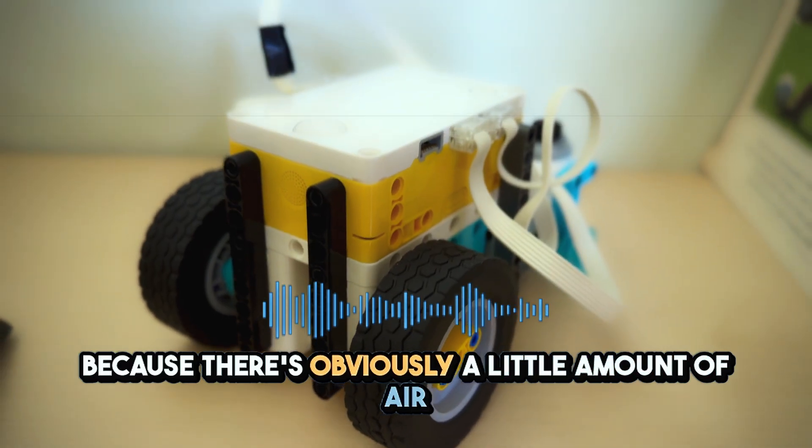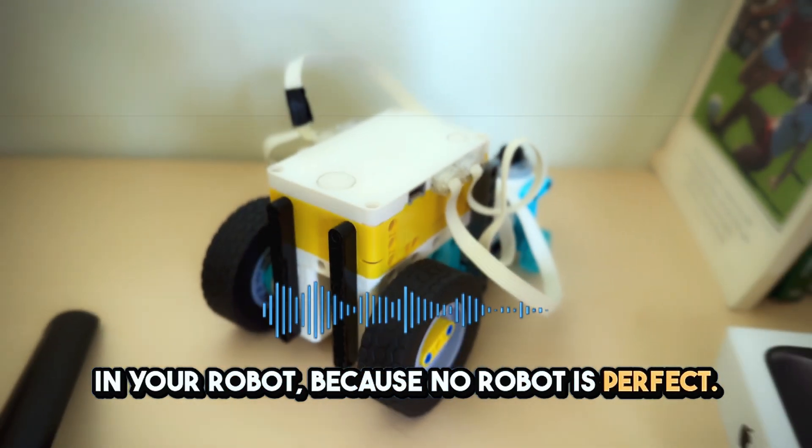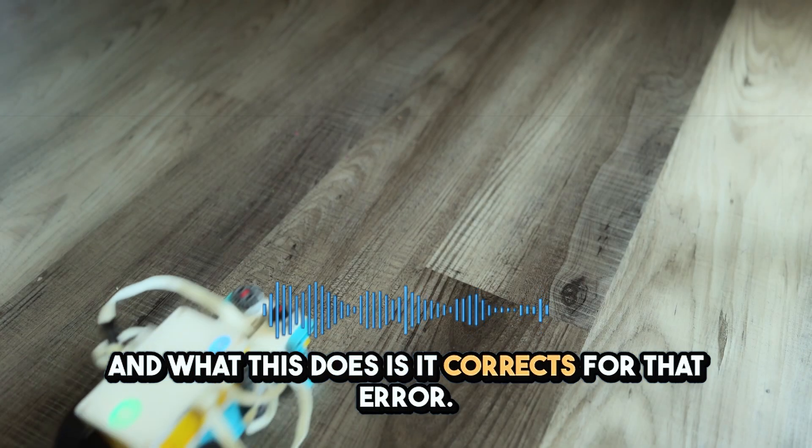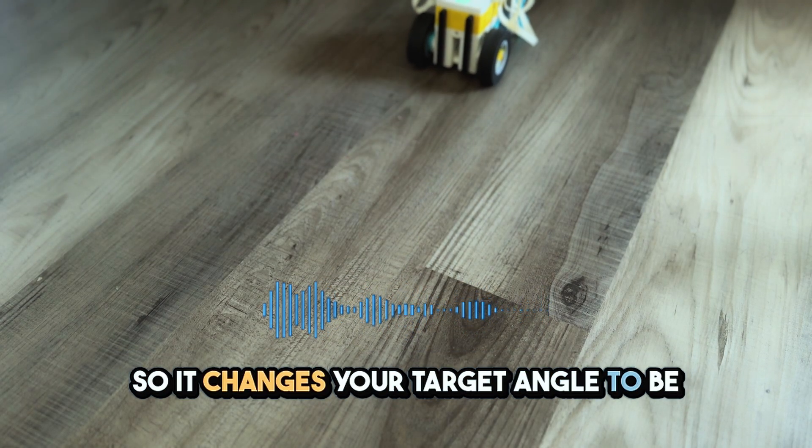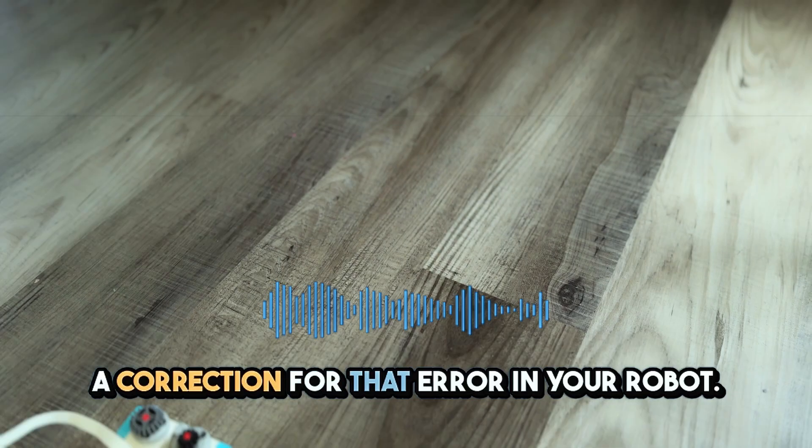Because no robot is perfect, and what this does is it corrects for that error. So it changes your target angle to be a correction for that error in your robot, and this is obviously different for every robot.